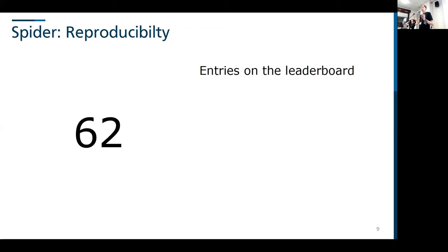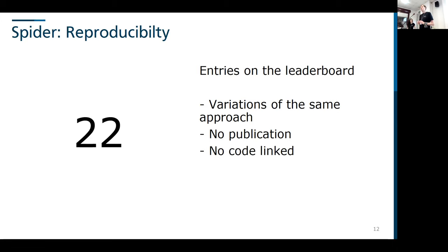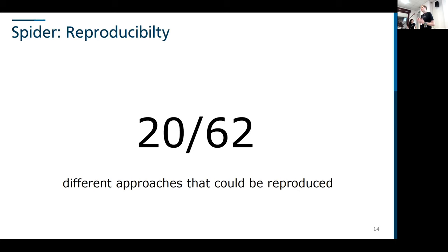But if we now look at those entries — back in June there were 62 entries on the leaderboard for the original Spider task. Unfortunately, if we want to reproduce them, we have to remove those that are only minor variations of the same approach, bringing us down to 51 approaches. Many are anonymous publications with only author names and no real publication link, so we're down to 36 entries. Then looking for code links, we find they often aren't there, leaving us with 22. Of those, two links are either invalid or the repositories are empty — so we're down to 20 of those 62 approaches that could in theory be reproduced.